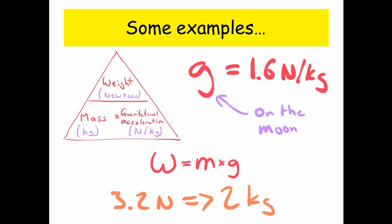Now, all those examples were on planet earth, but what if we were on the moon? Well, on the moon, gravitational acceleration is 1.6 newtons per kilogram, so it's a lot less. So, for example, at the bottom there, 3.2 newtons would actually be 2 kilograms, while on planet earth, 2 kilograms would have actually been 20 newtons.